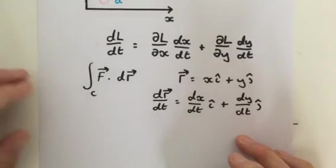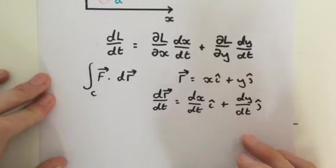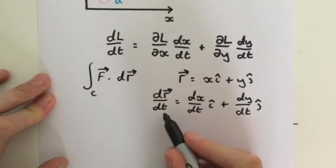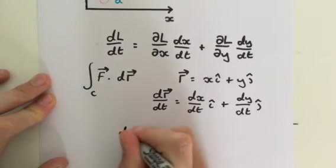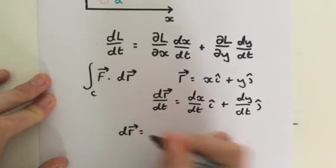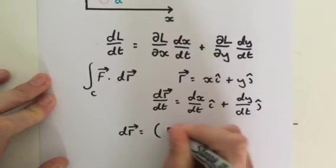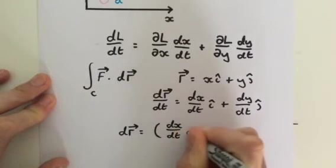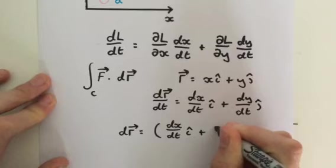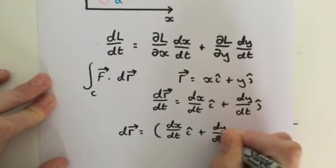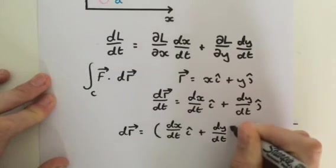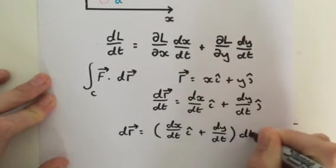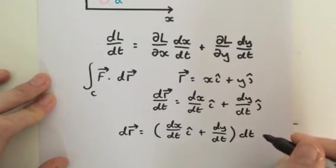And of course, to find dr, we simply multiply both sides by dt. So dr, therefore, is equal to dx by dt i plus dy by dt j, and we times that by dt.